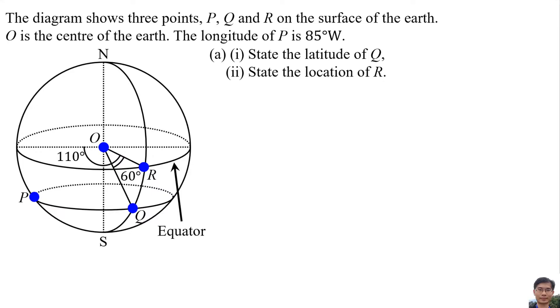State the latitude of Q. The latitude of Q is the angle from R to point Q, so the latitude of Q is 60 degrees.